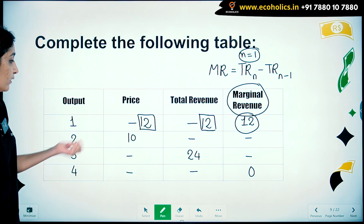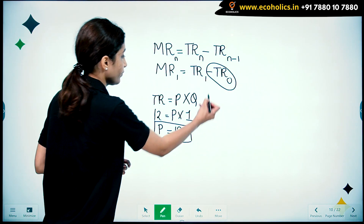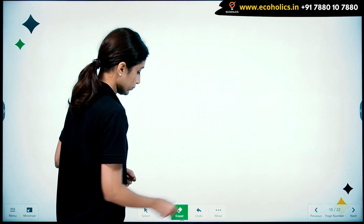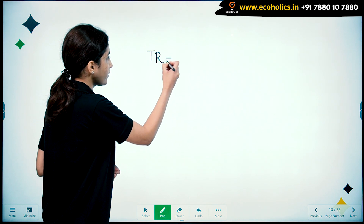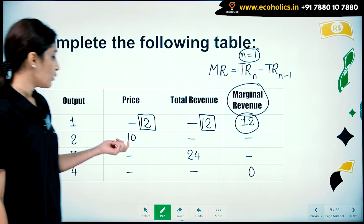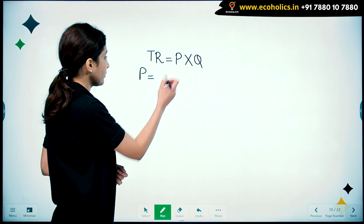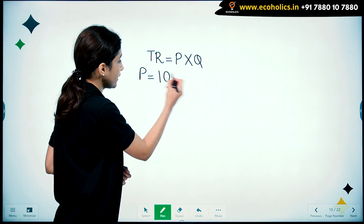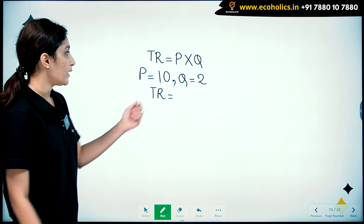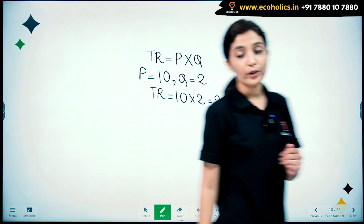For two units of output, price is 10. Using the formula for total revenue — total revenue = price × quantity — price is 10 and output is 2, so total revenue = 10 × 2 = 20.